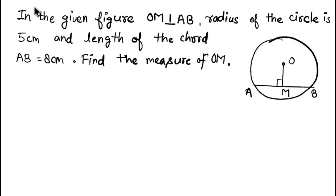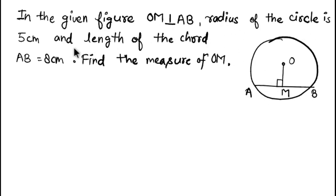Welcome back to Solution Mitra. Here is the question for today: in the given figure, OM is perpendicular to AB, the radius of the circle is 5 centimeters, and the length of chord AB is 8 centimeters. Find the measure of OM.